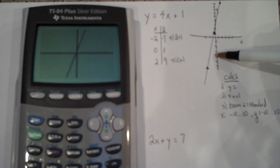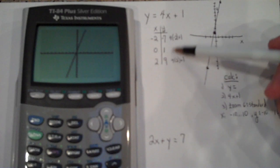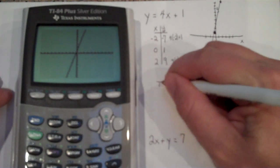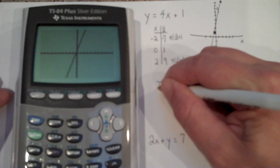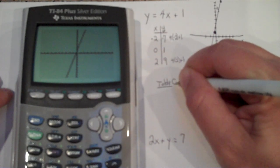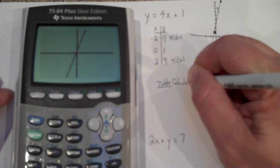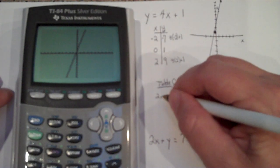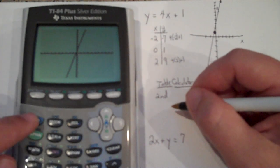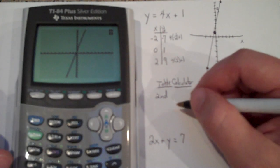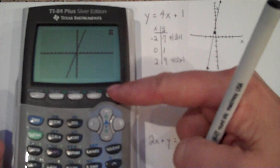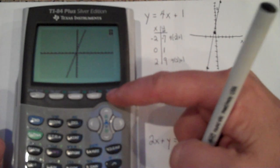Notice, if I want to verify using the calculator that these points are correct, I can access my table. So I'm going to write table here, and then calculator. So to access the table, I'm going to use the second function, which is the blue button right here, and then I'm going to use the graph button, which if you look at graph, above graph, it says table.